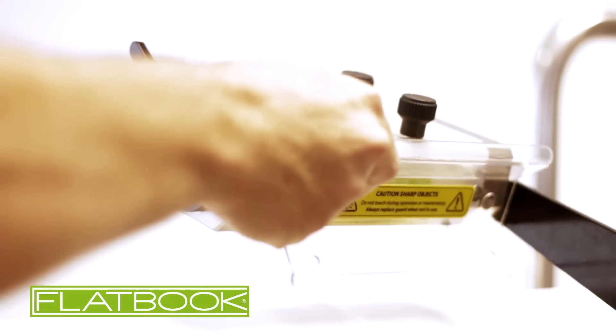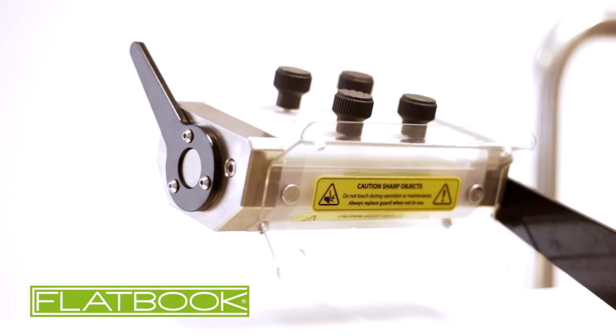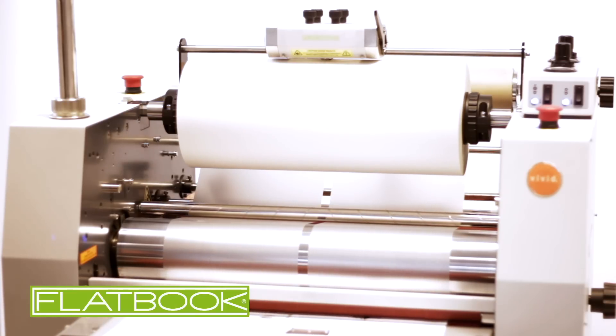The Flatbook cuts out a channel of OPP film as it laminates, leaving the inside spine completely unlaminated.